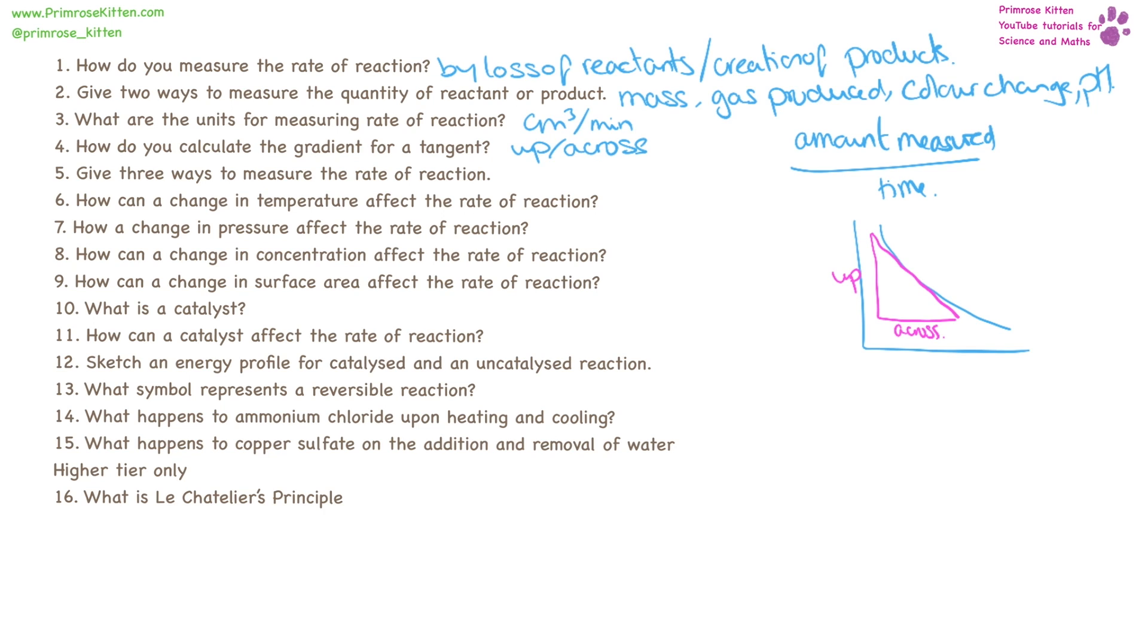Temperature can affect the rate of reaction. The faster is going to be correlating to a higher temperature. Pressure is going to affect the rate of reaction. When we have high pressure it's going to be faster. Concentration, higher concentration, faster. Surface area, large surface area is going to be faster. Please remember that a large surface area is going to be a powdered something, not a block of something.